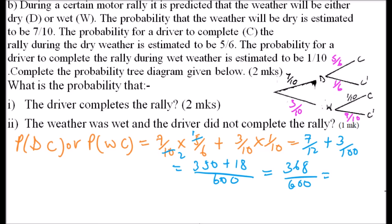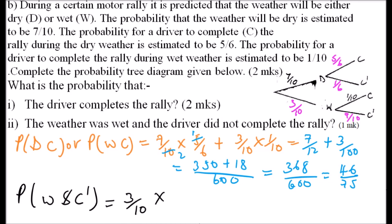For Part B (ii), the probability that the weather was wet AND the driver did not complete the rally equals 3/10 multiplied by 9/10, which gives 27/100. So that is how you work out that part. In total, answering all parts correctly earns you eight marks.